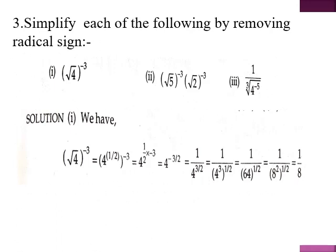Now we have to remove the radical sign. The first example is root 4 whole raised to the power minus 3. Square root means the power is 1 by 2, so remove the radical sign and write the power as 1 by 2. With 1 by 2 and minus 3 combined, the total power is 4 raised to the power minus 3 by 2. Since the power is negative, the number goes to the denominator: 1 upon 4 raised to the power 3 by 2. Now 4 cubed is 64, and taking the square root — 64 equals 8 squared, so the 1 by 2 and square cancel — the final answer is 1 upon 8.